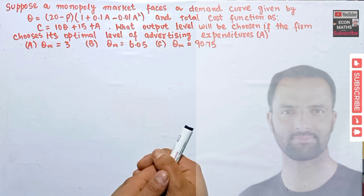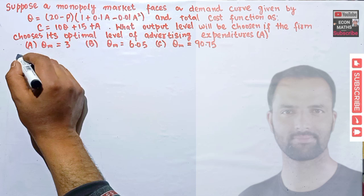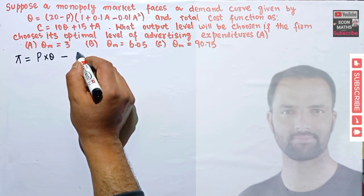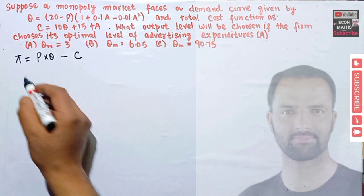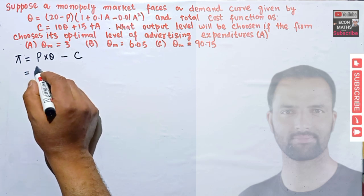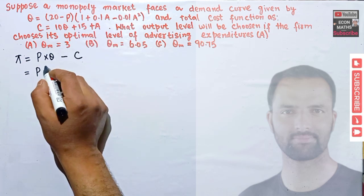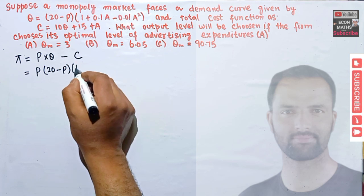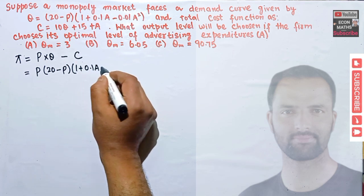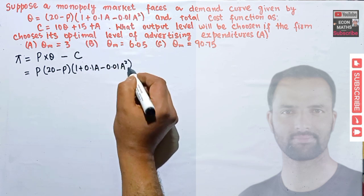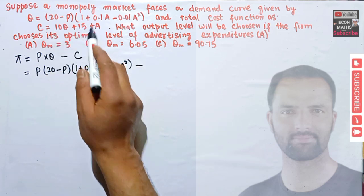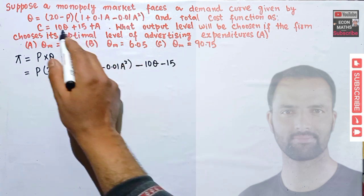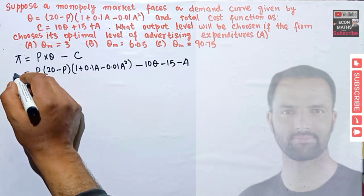First, we need to find the profit function. Profit is simply equal to price times quantity minus total cost. So we write P times Q, where Q = 20 - P times (1 + 0.1a - 0.01a²), then we subtract the total cost, which gives us minus 10Q minus 15 minus a.